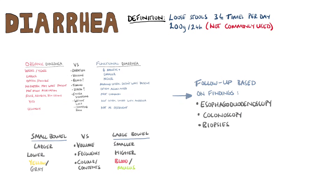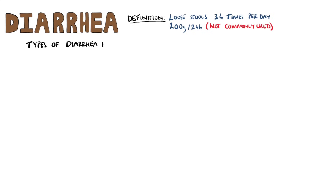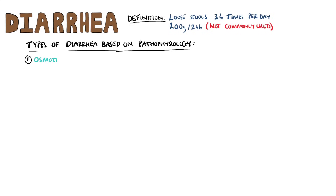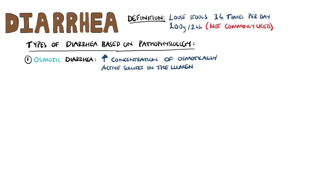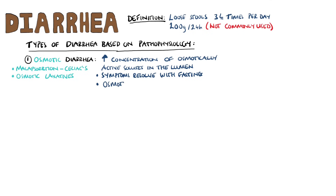So that's it for the clinical side of things, but it's worth knowing about the different types of diarrhea based on the pathophysiology. First off, we have osmotic diarrhea, where there is an increased concentration of osmotically active solutes in the lumen, and so water remains in the lumen. The causes are malabsorptive diseases like celiac disease, or things like osmotic laxatives. Interestingly, the symptoms will resolve if the patient fasts. The osmotic gap here is often greater than 100 milliosmoles per kilo.